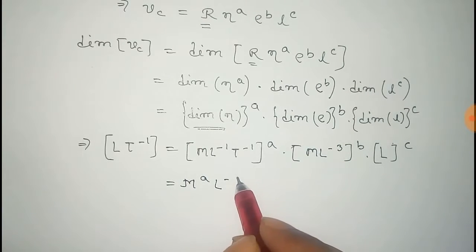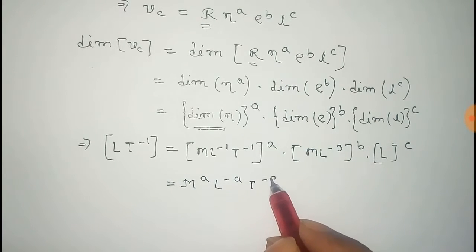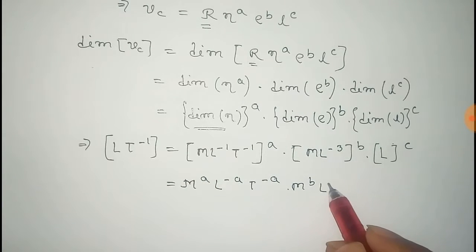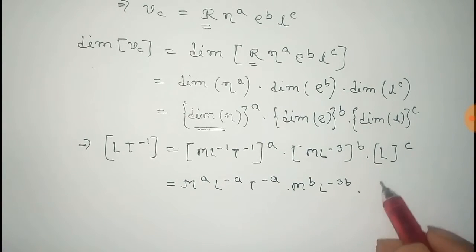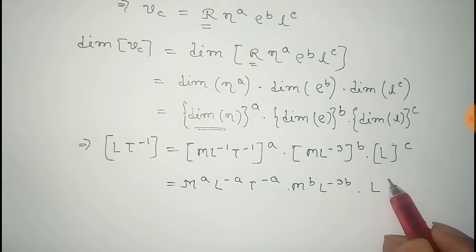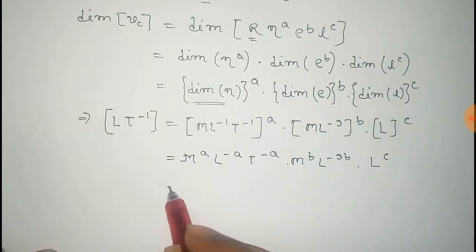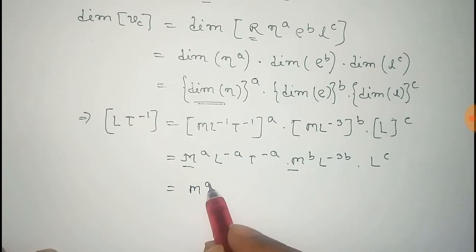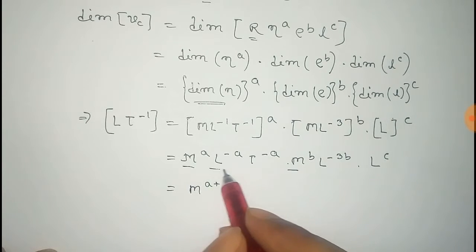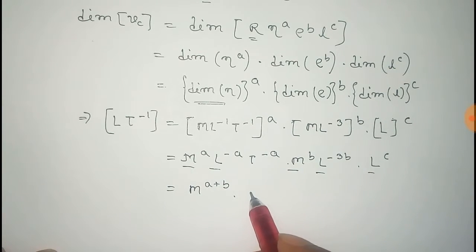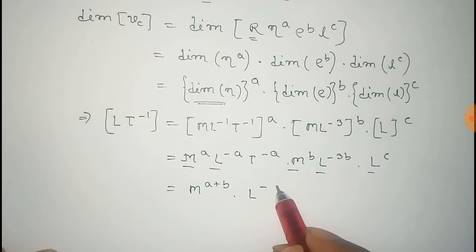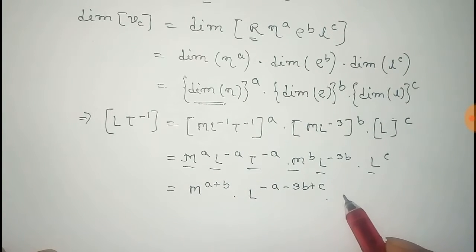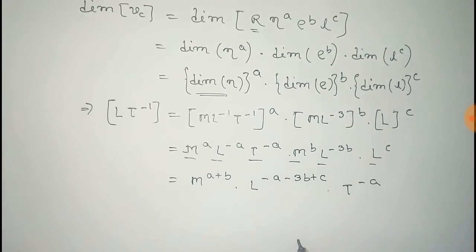Expanding this, we get M to the power a, L to the power minus a, T to the power minus a, times M to the power b, times L to the power minus 3b, times L to the power c. Now summing the powers of M we get M to the power a plus b; summing the powers of L we get L to the power minus a minus 3b plus c; and summing the powers of T we get T to the power minus a.